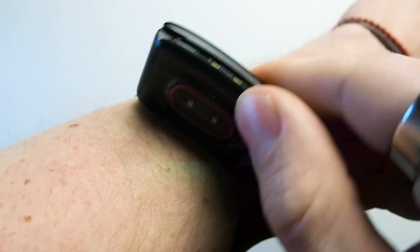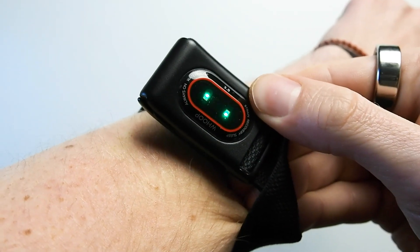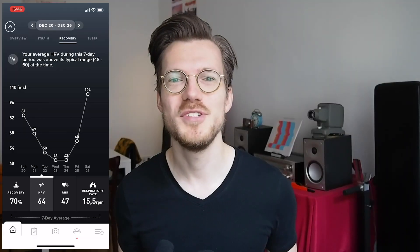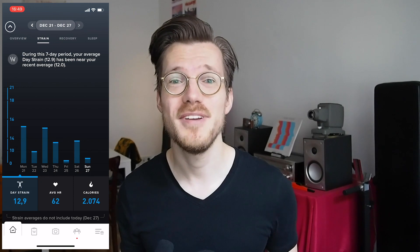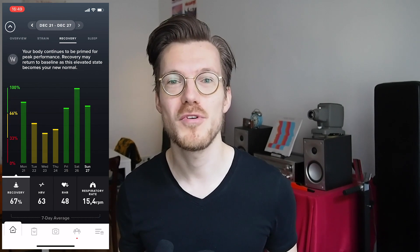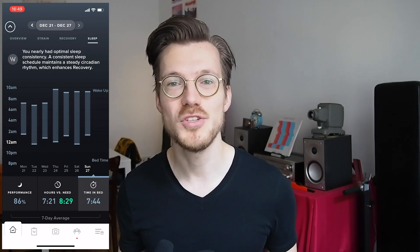Now the WHOOP Strap itself has a number of sensors: an accelerometer, a gyroscope and a PPG sensor which it uses to measure heart rate, heart rate variability and respiratory rate. Finally it has a capacitive touch sensor and a temperature sensor. Now all of these data feed into the WHOOP algorithms to give you a number of scores about your day and also to track your sleep.